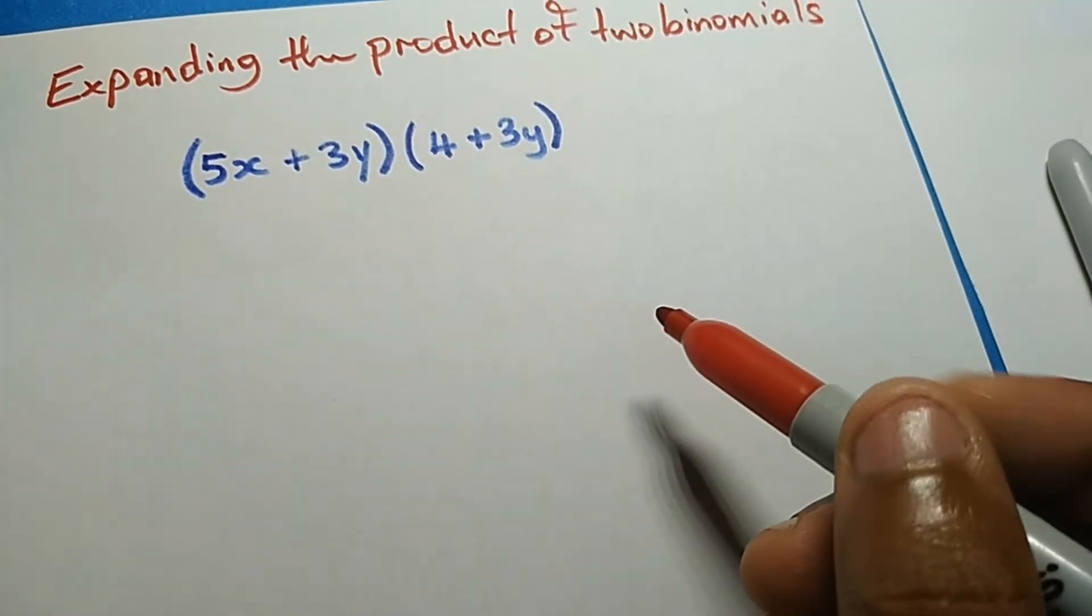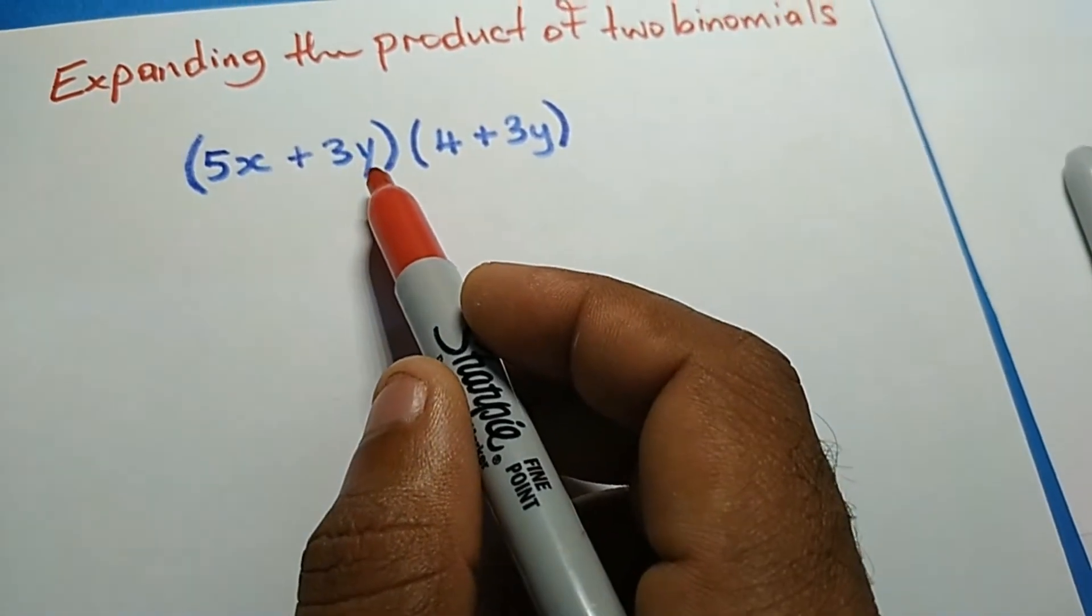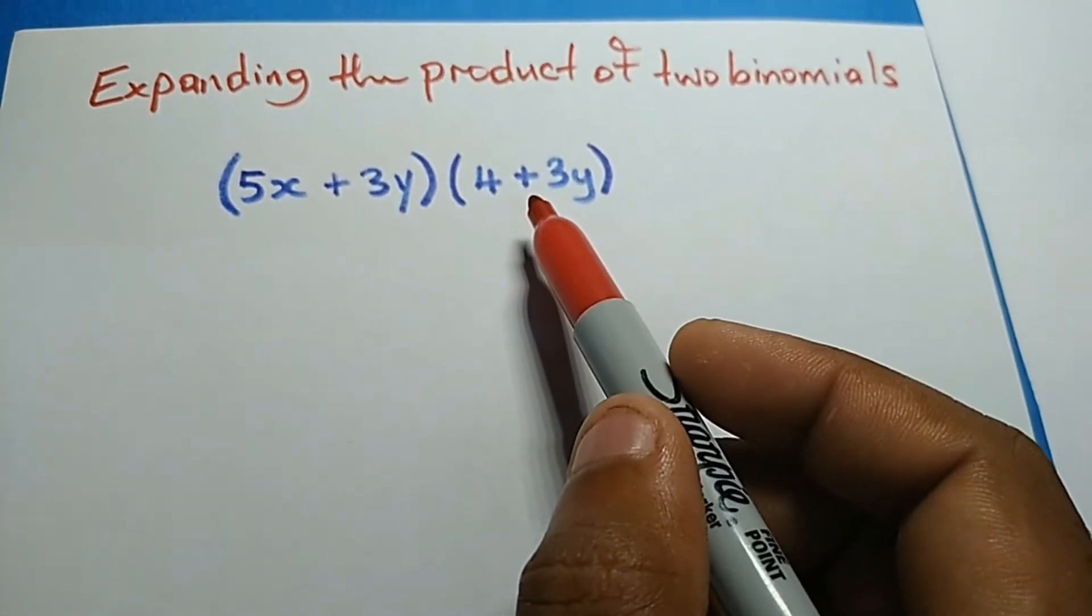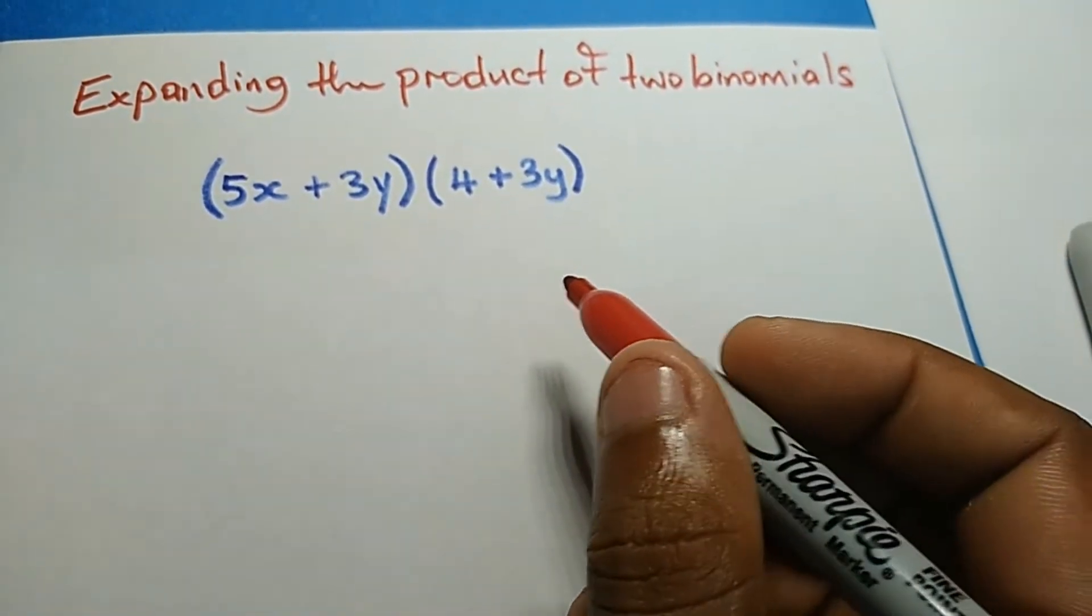So let's expand this. This is the product of two binomials - 5x + 3y is a binomial and 4 + 3y is also a binomial. I'm going to expand these brackets.